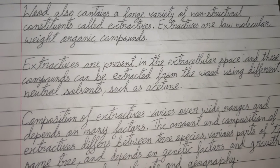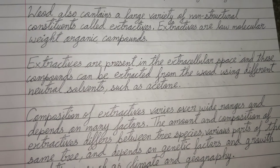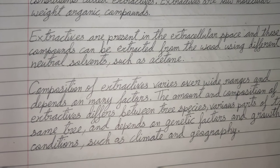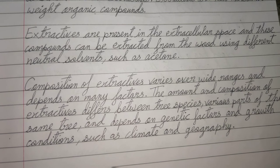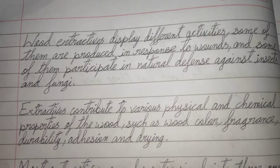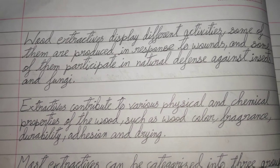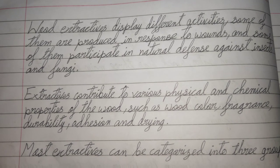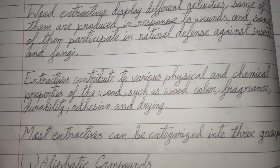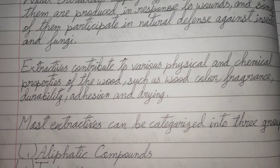The composition of extractives varies over wide ranges and depends on many factors including tree species, various parts of the same tree, and genetic factors and growth conditions such as climate and geography. Wood extractives display different activities: some are produced in response to wood wounds and some participate in natural defense against insects and fungi. Extractives contribute to various physical and chemical properties of wood such as color, fragrance, durability, adhesion, and drying.